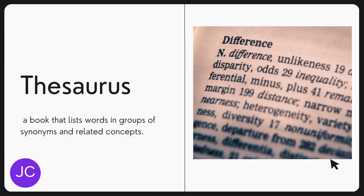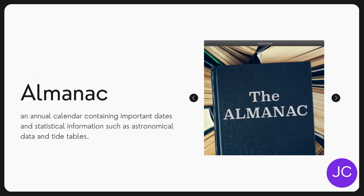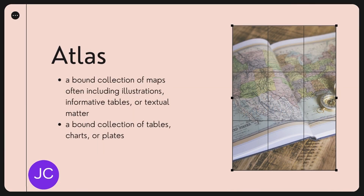Thesaurus: a book that lists words in groups of synonyms and related concepts. Almanac: an annual calendar containing important dates and statistical information such as astronomical data inside tables. Atlas: a bound collection of maps, often including illustrations, informative tables, or textual matter; also a bound collection of tables, charts, or plates.